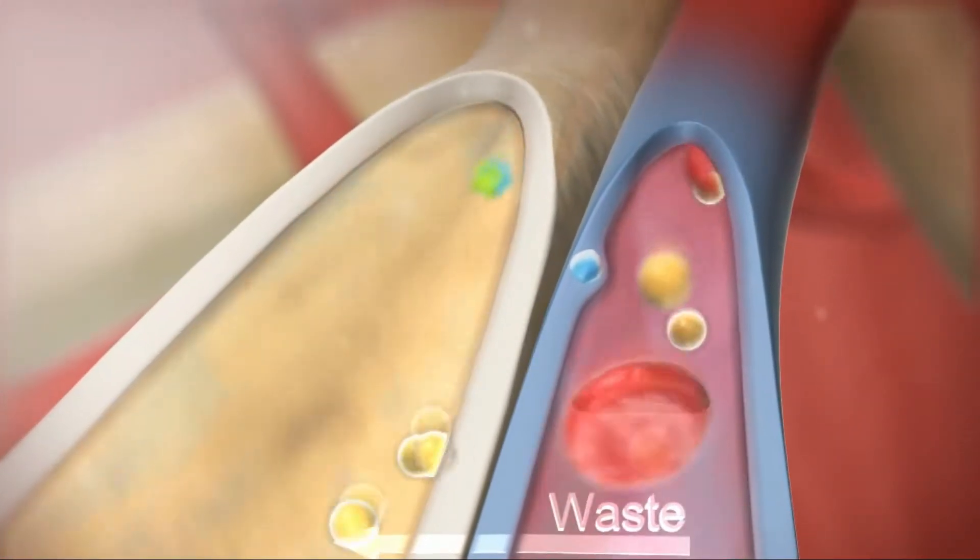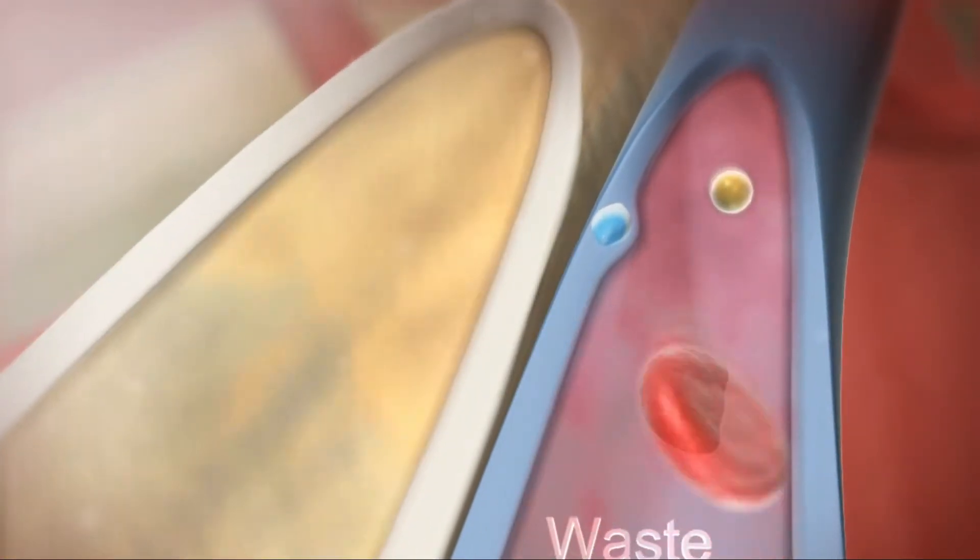At the same time, additional waste ions and hydrogen ions still in the blood pass from capillaries into the renal tubule. This process is called secretion.